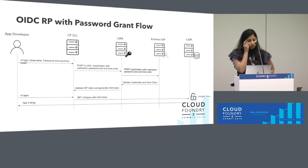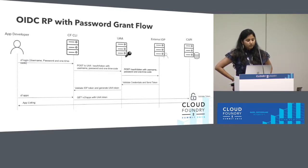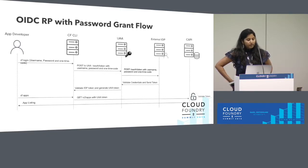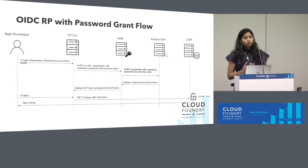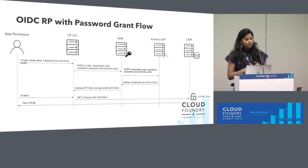Let's walk through what's happening behind the scenes using the example of the Cloud Foundry command line interface. As an app developer, when you perform a login, you take two routes: you could perform a login through the UI for single sign-on, but now you can actually present credentials — external identity credentials — within the CF CLI. You enter a username, password, and optionally a one-time code of the external provider, not UAA. We are collecting credentials for the external identity provider, not for a user in UAA.